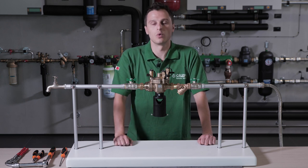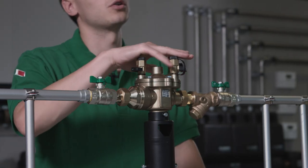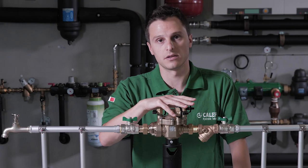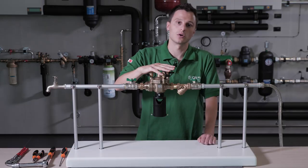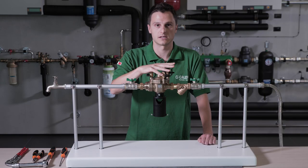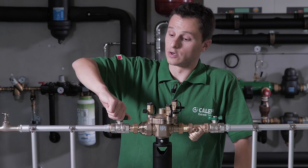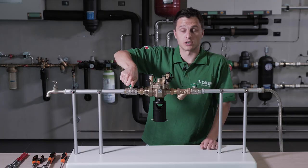to verify whether the backflow preventer is operating correctly or not. The first method is instrumental - we will use a differential manometer. The second one is a quick performance test. If we close the downstream shutoff valve